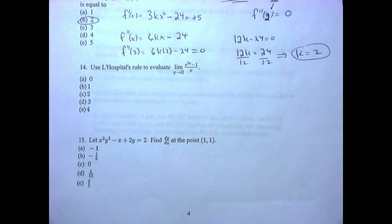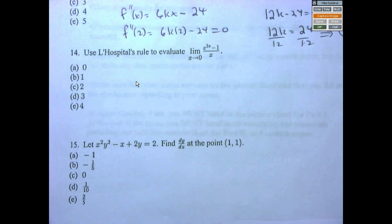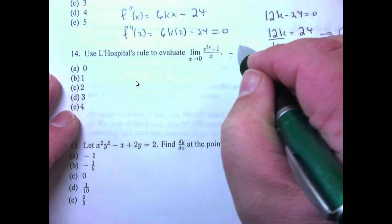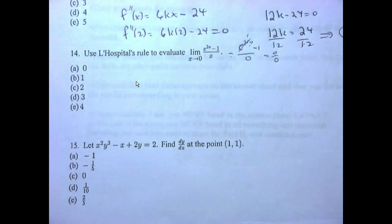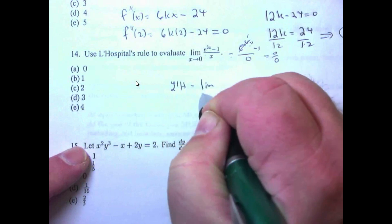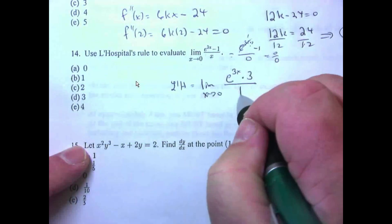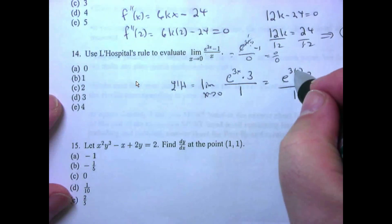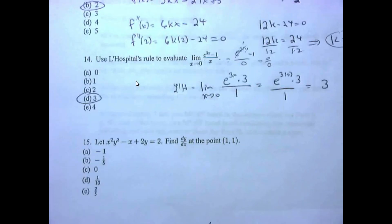Number fourteen — L'Hopital's rule. First rule of limits: always plug in the number first. Taking the limit as x approaches zero of e to the 3x minus one over x. Plugging in zero: e to the zero minus one over zero is zero over zero — indeterminate form. Apply L'Hopital's rule: derivative of top is e to the 3x times three, derivative of bottom is one. Re-plugging in zero: e to the zero times three over one equals three. The answer is 3, which is answer D.